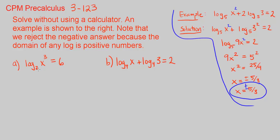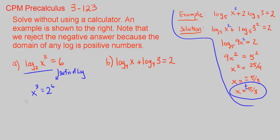Part A says log base 2 of x cubed is equal to 6. We can go ahead and rewrite this in exponential form. That gives us x cubed — the input to log base 2 — equals 2 to the power of 6. That's just using the definition of a logarithm, which lets you write these two forms as equivalent.